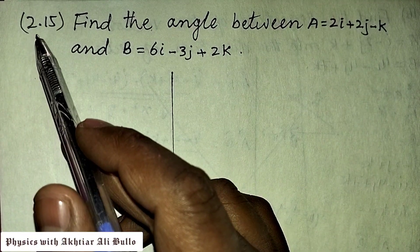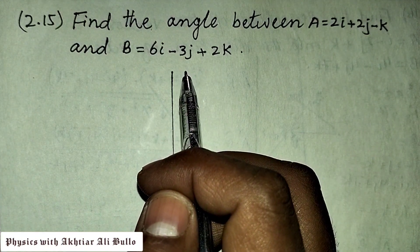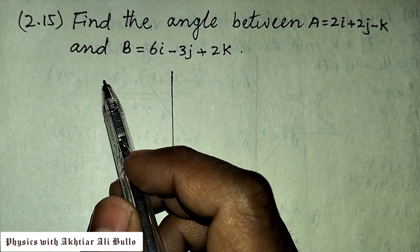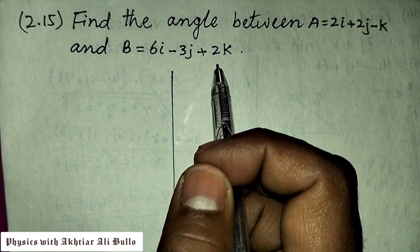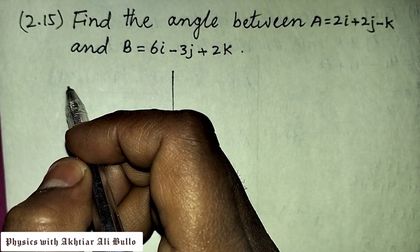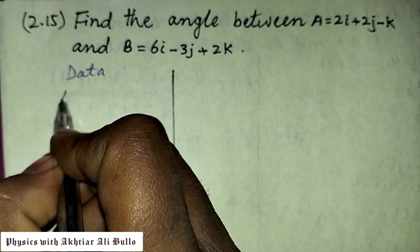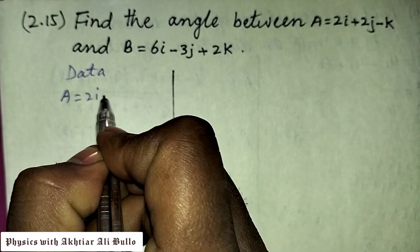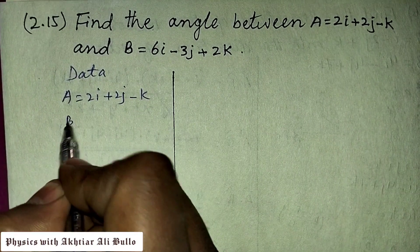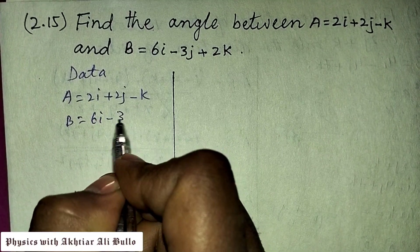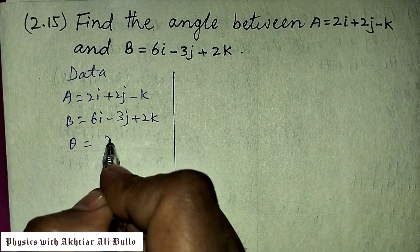Problem 2.15: find the angle between a = 2i + 2j - k and b = 6i - 3j + 2k. First of all we will form the data. Vector a is 2i + 2j - k and vector b is 6i - 3j + 2k. We have to find the angle between a and b.